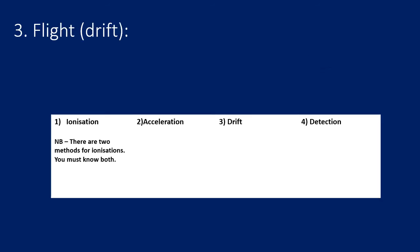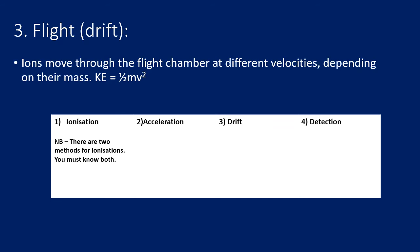The third stage is flight or drift. Depending upon their mass — as already covered — heavier particles will travel slower and lighter particles will travel faster, so they will reach the detector at different times.